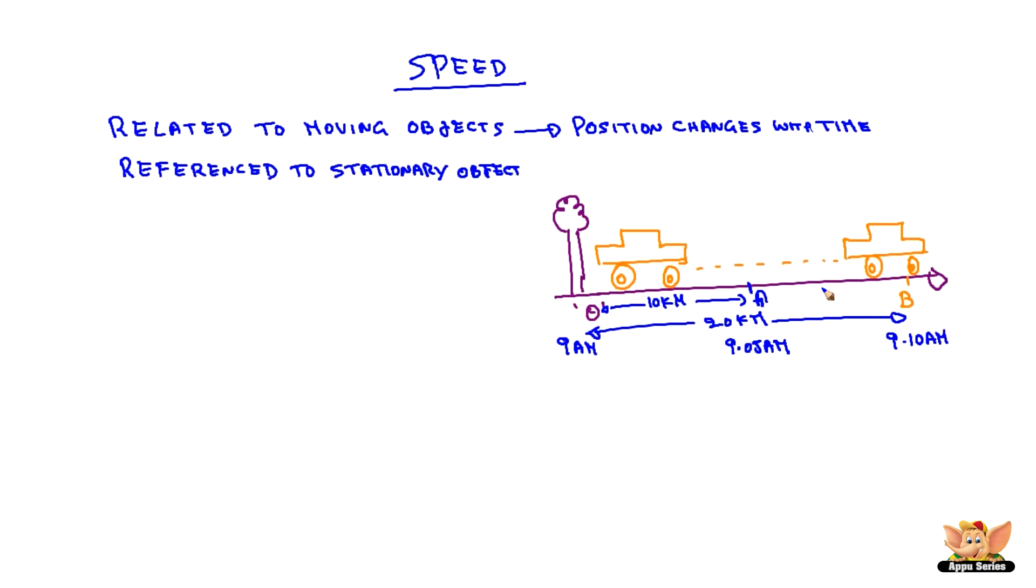So, the moving object depends on two factors: the distance and the time. Hence, we can define speed as a relationship between the distance travelled and the time taken to cover the distance.